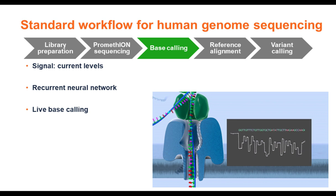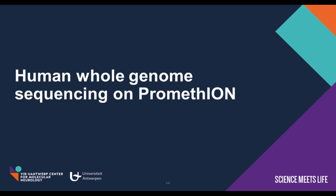The electrical current signal is characteristic for the sequence at the constriction of the pore — this spiky current signal is called a squiggle. In the base-calling step, this squiggle is translated to nucleotides using a recurrent neural network, a machine learning technique. Base calling can be performed live while the run is ongoing. As we work in human genetics, we have evaluated Promethion sequencing on the human genome.